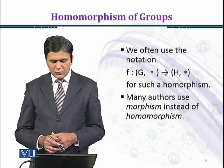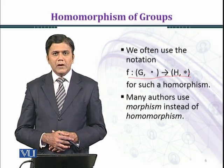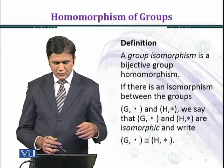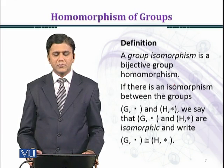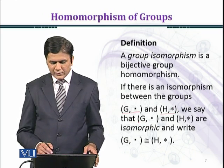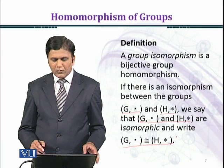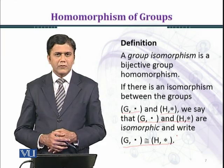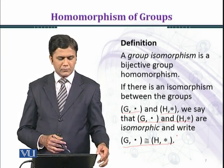We often use the notation F from (G, ·) to (H, ★) for such a homomorphism. Many authors use the term morphism instead of homomorphism. A group isomorphism is a bijective group homomorphism. If there is an isomorphism between the groups G under multiplication and H under binary operation star, we say that G and H are isomorphic and write G ≅ H.